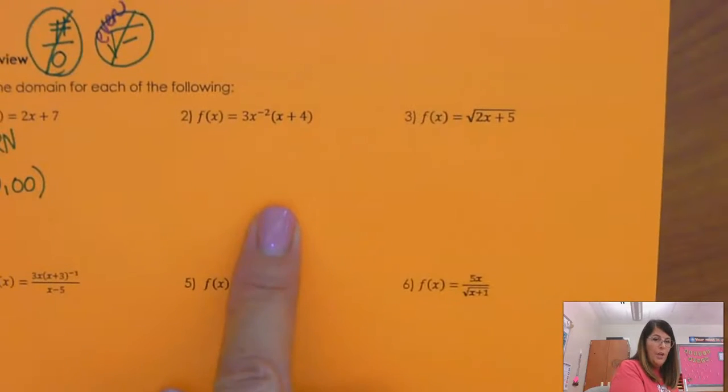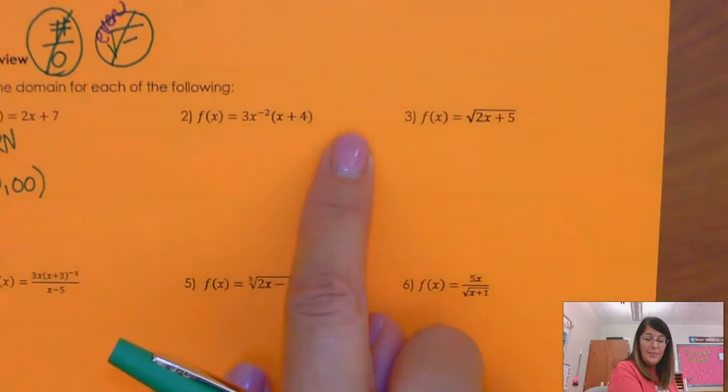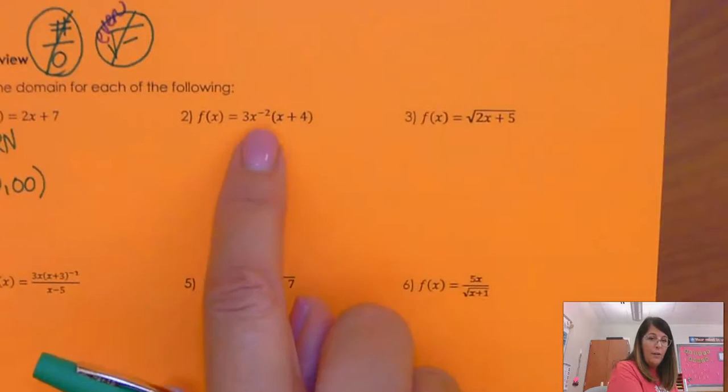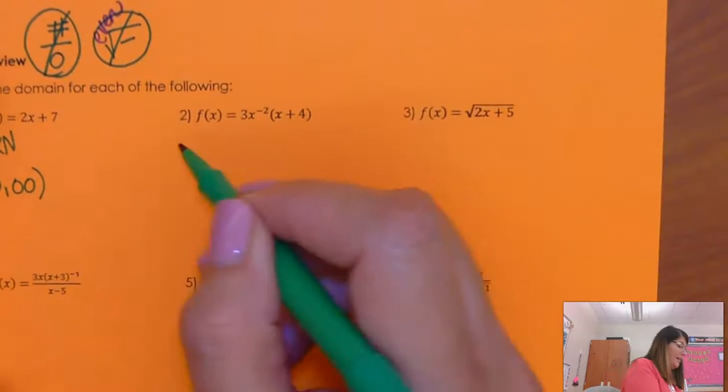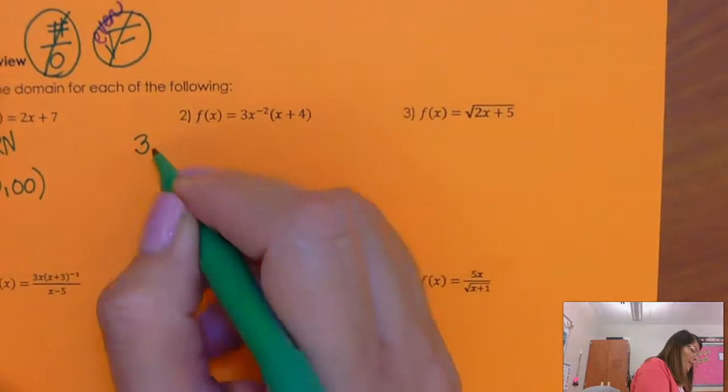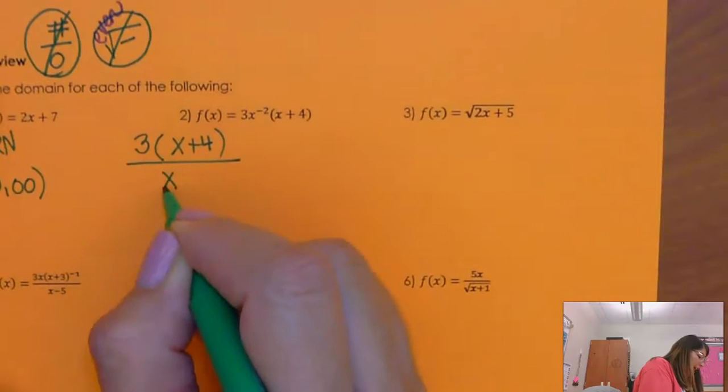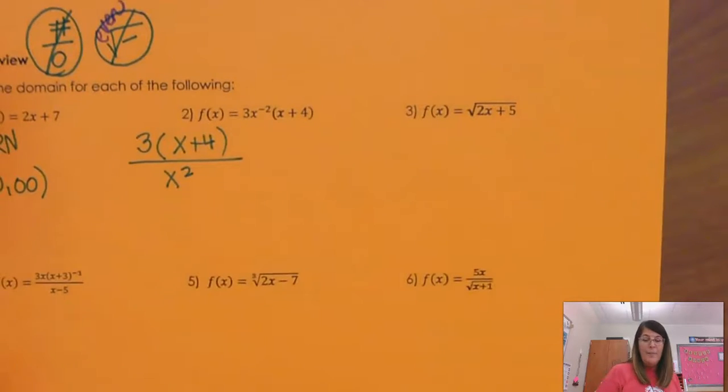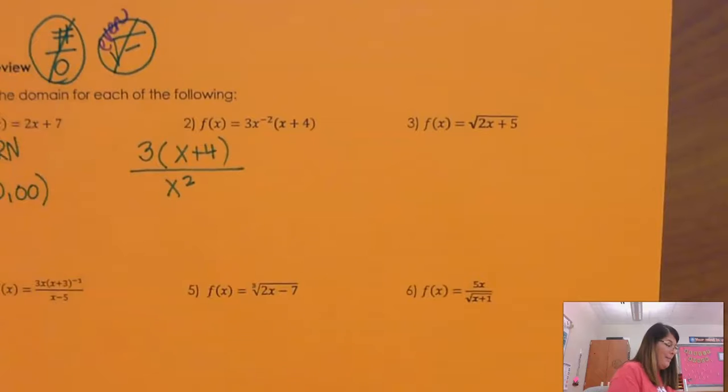Now I look at this next one. So at first glance, you think, oh, there's no limitations because I don't see a fraction or a radical. But you see that negative exponent? You have to write it as a fraction first. So the 3 doesn't move and the x plus 4 doesn't need to move. But the x squared needs to go to the denominator because that's what a negative exponent is.